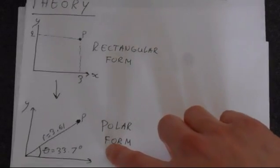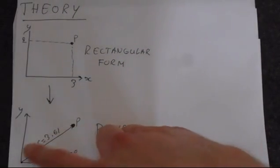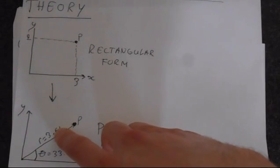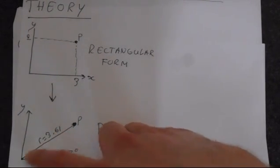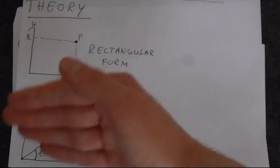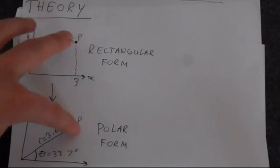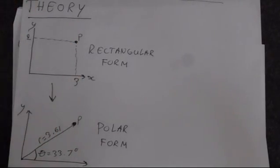And in polar form, what you're doing is you're specifying the point P by a distance r, so a line of length r, and you're rotating that line through an angle of theta and that is specifying the point P. Obviously these P's are in the same position.